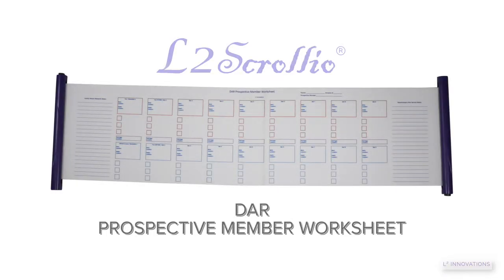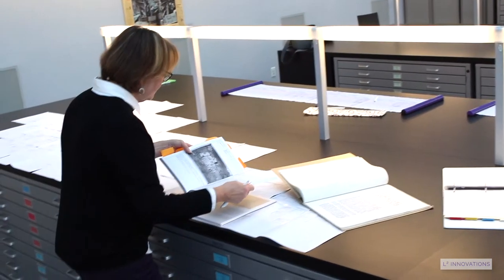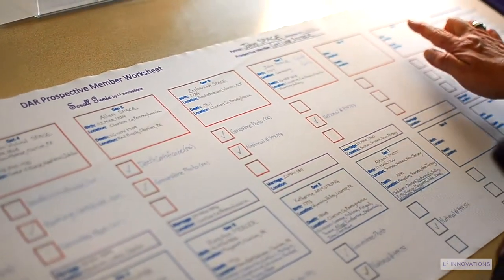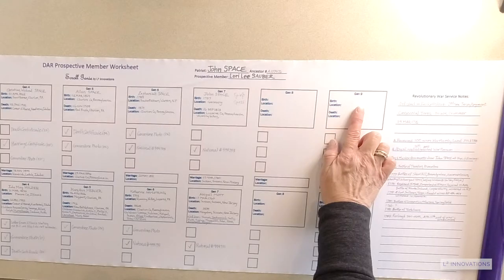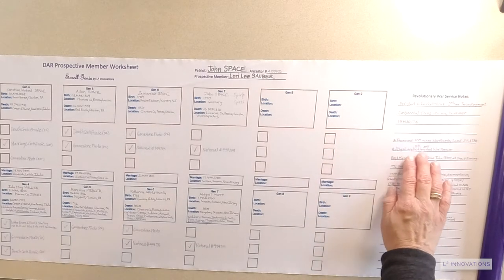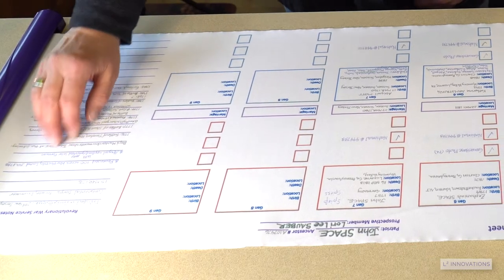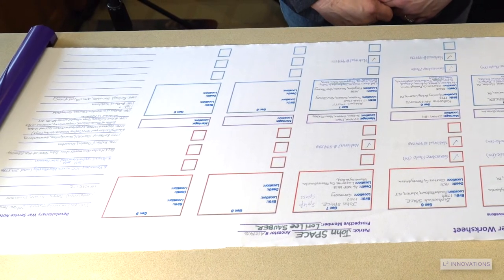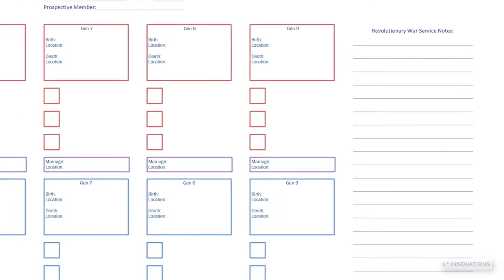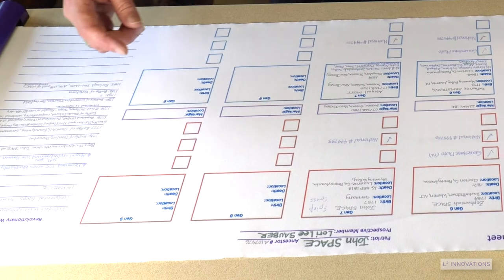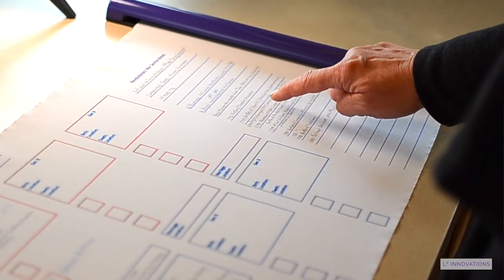Now the DAR prospective member worksheet functions in basically the same way. However, people living today and having to trace their lineage back to 1776 will be able to do so in nine generations, and along the way curious researchers will uncover amazing documents that they don't want to lose sight of but are not the types of documents needed for the society's validation process. I provided you with areas to write stories or note other important timeline events on each side of the scroll. For example, each time I found a pay packet document for my soldier I noted it on the lines to the right.